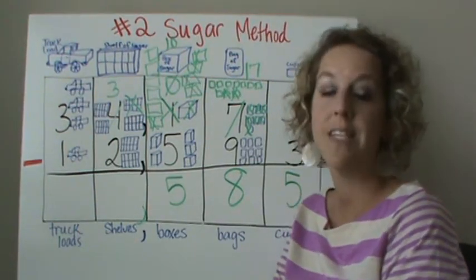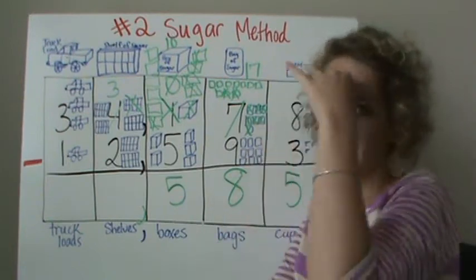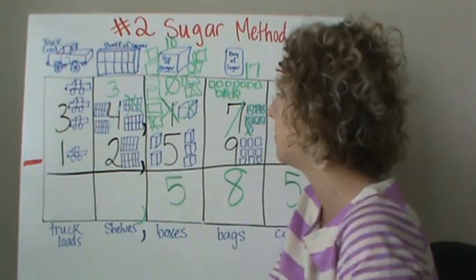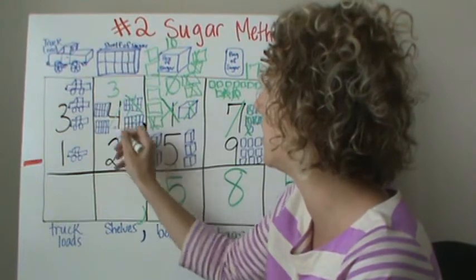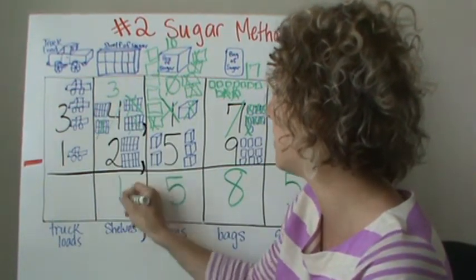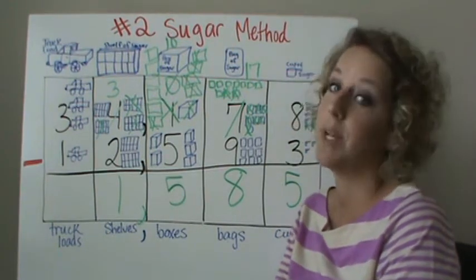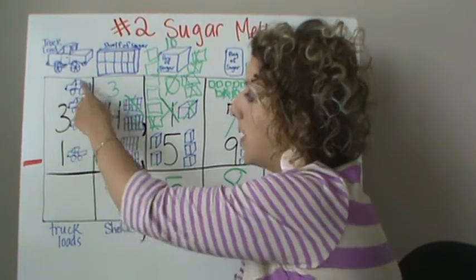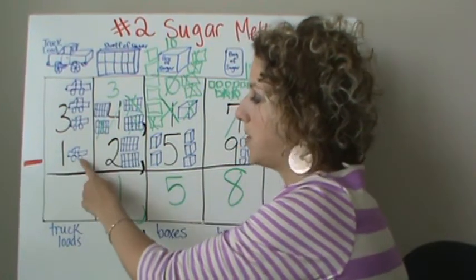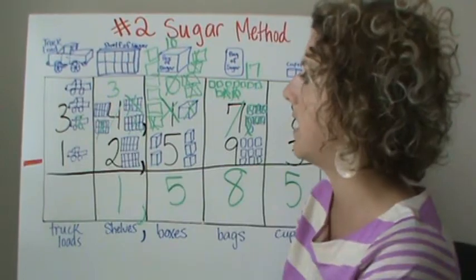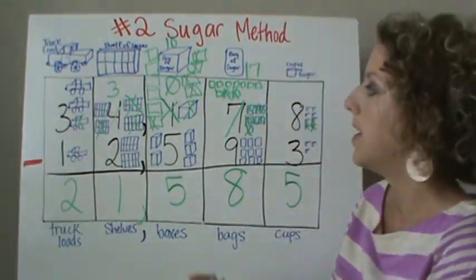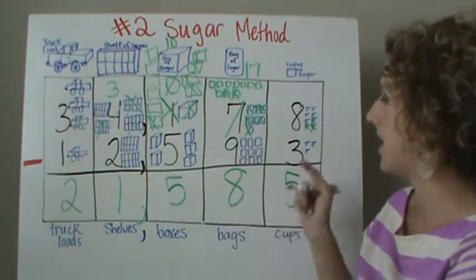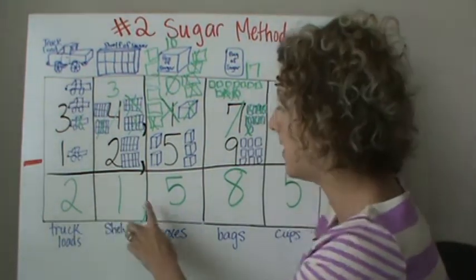On to the thousands place, or the shelves of sugar. We have three shelves available and we only need two. Three minus two is one — we still have one left over. And for the ten thousands, we need one truckload and we have three. Three minus one is two. So 34,178 minus 12,593 is equal to 21,585.